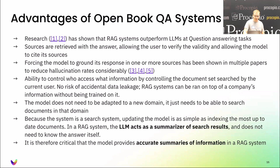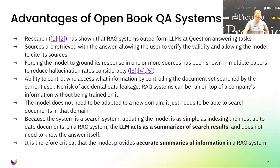By forcing the model to ground its responses in some kind of source text or information source, it has also been shown to lower the hallucination rate. So not only are these systems more accurate, but they tend to hallucinate less.